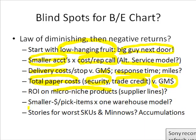Another area of diminishing returns is as we start to stock smaller and smaller items. Maybe the margin percent is bigger, but 80% margin on a $1 item is $0.80 of margin. If it costs us $3, $4, $5, $10, $15 to pick it in the warehouse, we're losing on every pick.